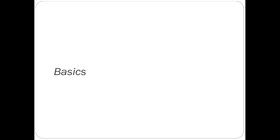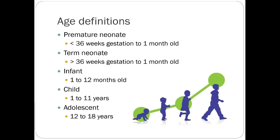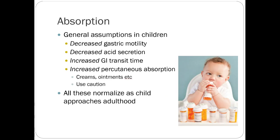This covers definitions and kinetics related to kids — how drugs move through their bodies at different rates than adults, and some general trends in pediatric medicine. Terms: premature is less than 36 weeks gestation; neonates up to one month old. Term neonates are greater than 36 weeks. Infant is up to a year, child up to 11 years, and adolescent is post-puberty.